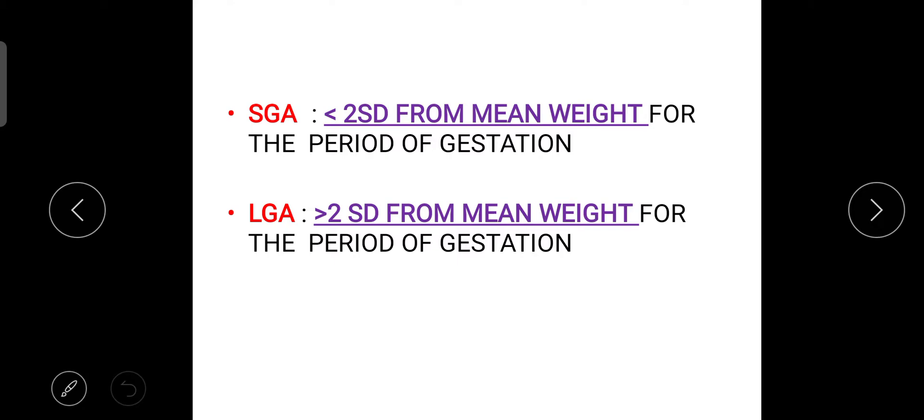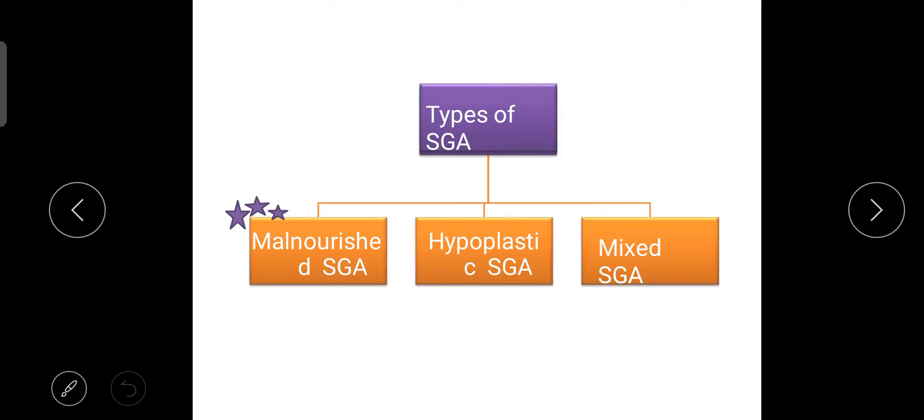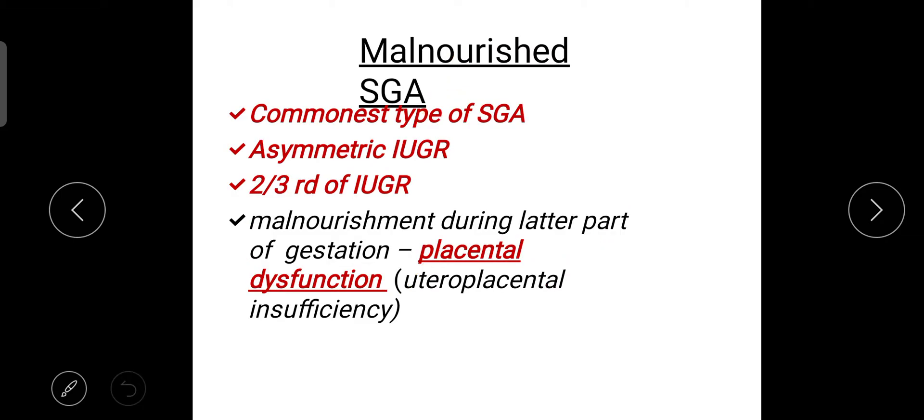Types of small for gestational age: there are three types. One is malnourished, one is hypoplastic, one is mixed. First one is malnourished SGA. It is the commonest type of SGA and it is asymmetric intrauterine growth retardation. Two-thirds of intrauterine growth retardation is malnourished SGA, and malnourishment during the later part of gestation, placental dysfunction and uteroplacental insufficiency.